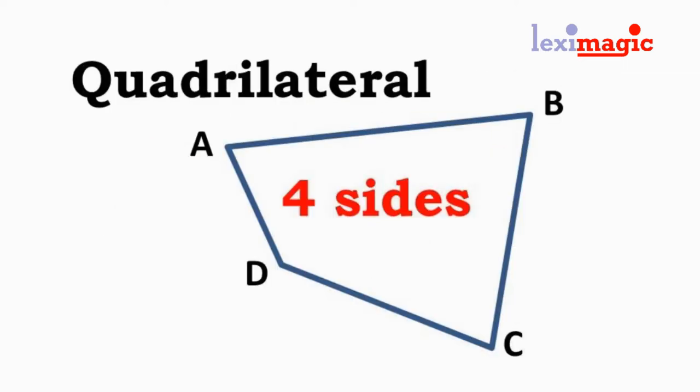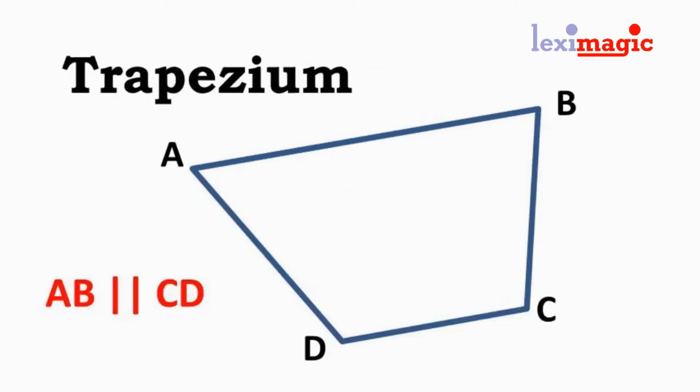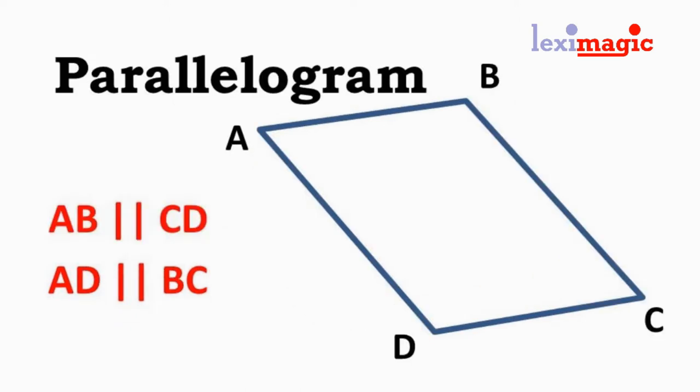A polygon having four sides is a quadrilateral. A quadrilateral in which a pair of opposite sides are parallel is known as a trapezium. A quadrilateral in which both pairs of opposite sides are parallel to each other is known as a parallelogram. In this, each pair of opposite sides is equal to each other.